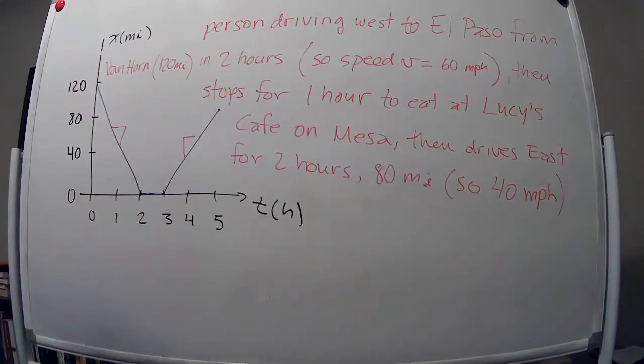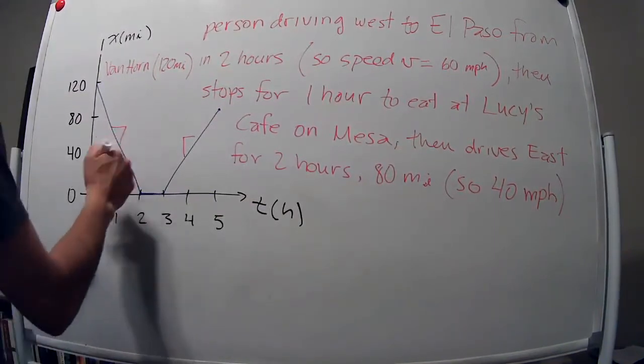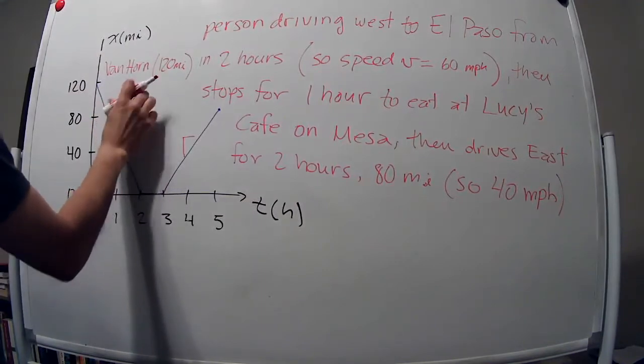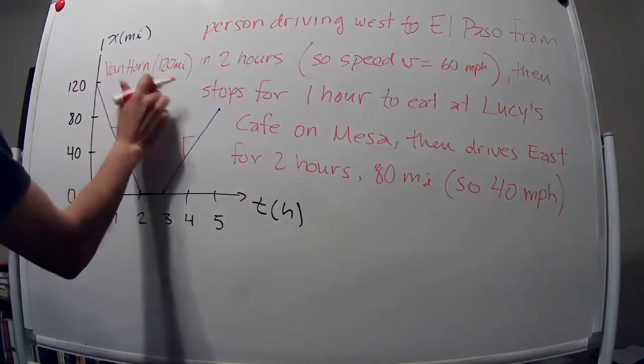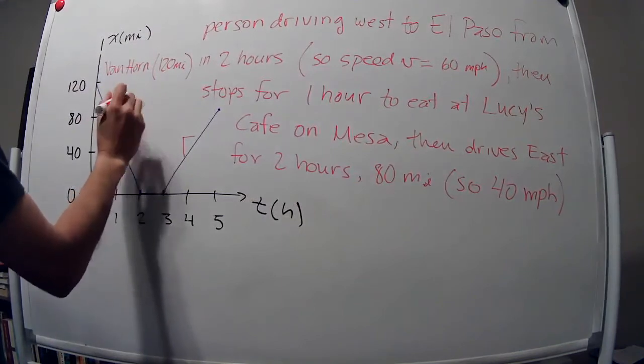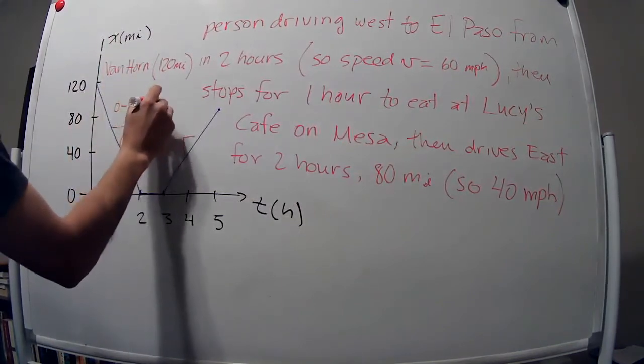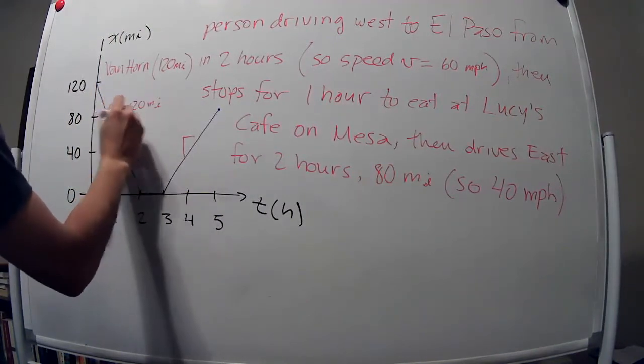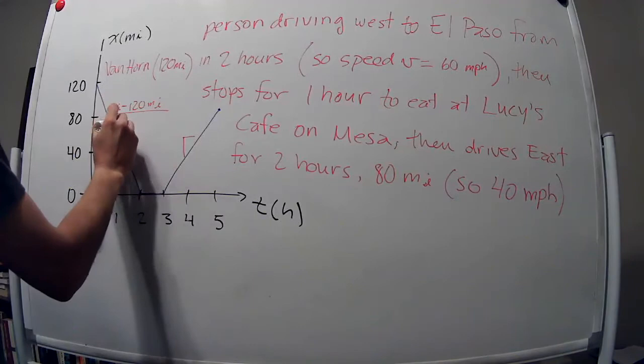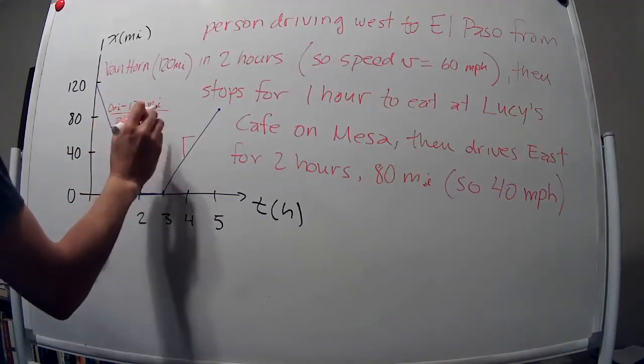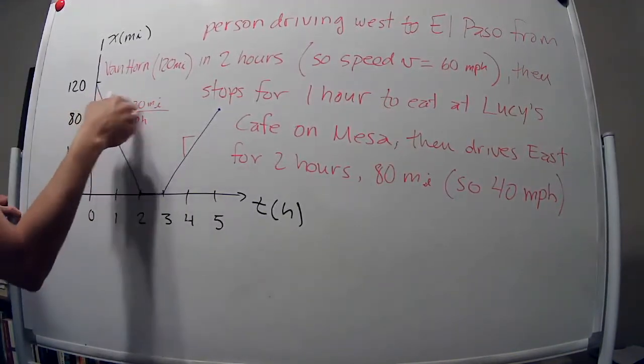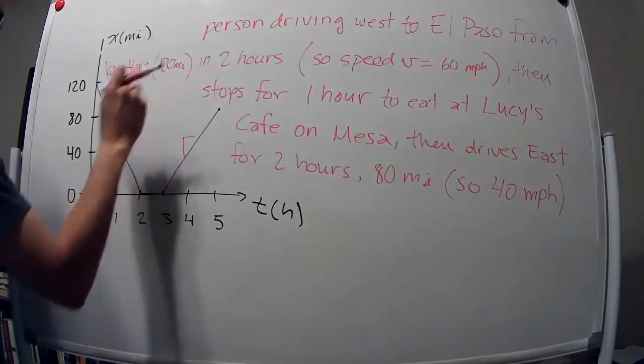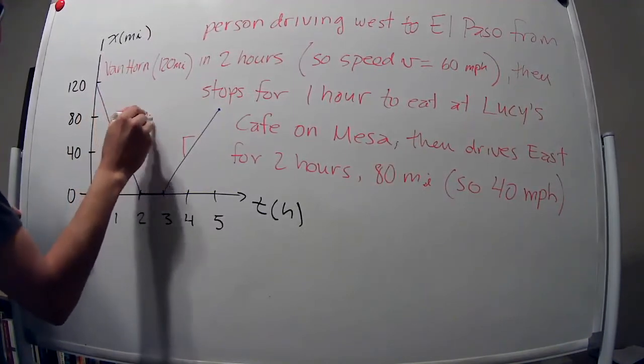So here, the slope is negative. So zero minus 120 miles, zero miles, divided by two hours minus zero hours. Well, that's 120, minus 120, divided by two. That's negative 60 miles per hour.